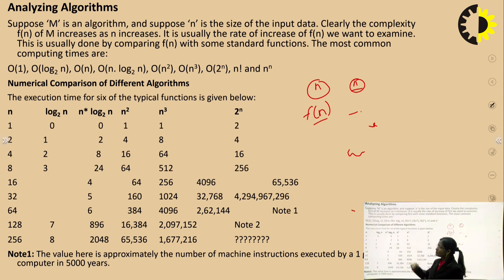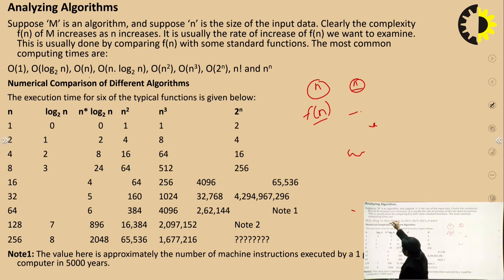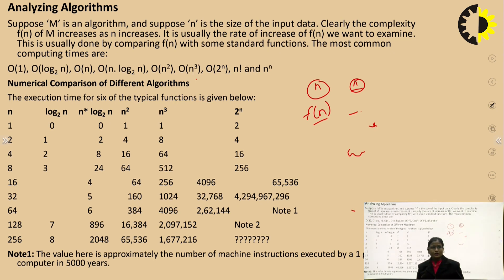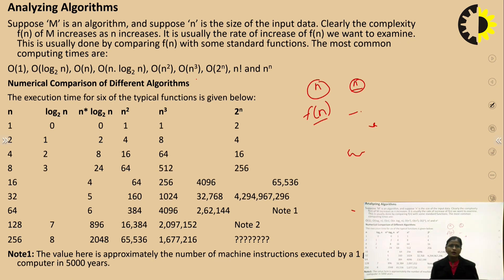The most common computing times when calculating asymptotic notation are: O(1), O(log n), O(n), O(n log n), O(n²), O(n³), O(2ⁿ), and O(nⁿ). According to the input value, the complexity may be O(1) in the best case, or log n, n, n log n, n², or n³ — depending on the design of our algorithm.